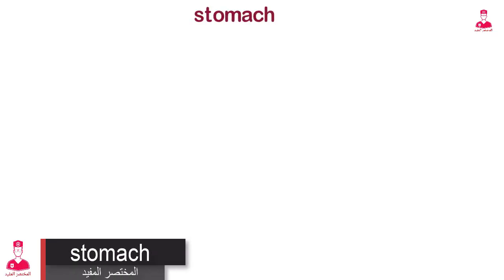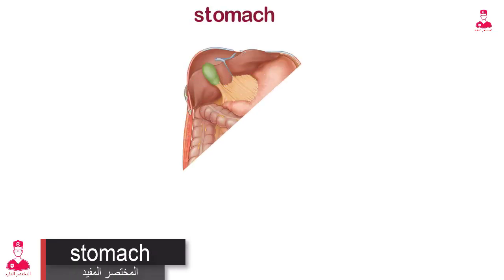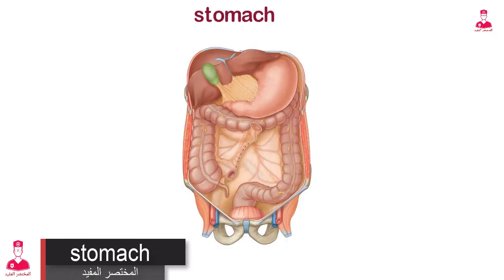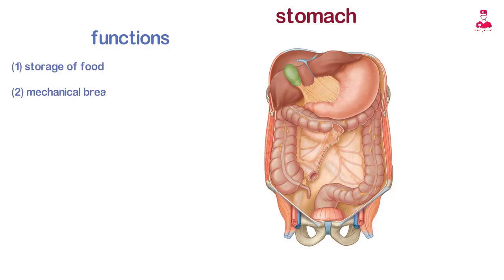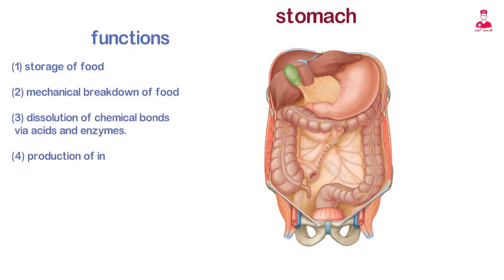The stomach is the dilated portion of the digestive system that acts as a food reservoir and is responsible for the early stages of digestion. It has four major functions: 1. Storage of food. 2. Mechanical breakdown of food. 3. Dissolution of chemical bonds via acids and enzymes. 4. Production of intrinsic factor, which is necessary for the absorption of vitamin B12.